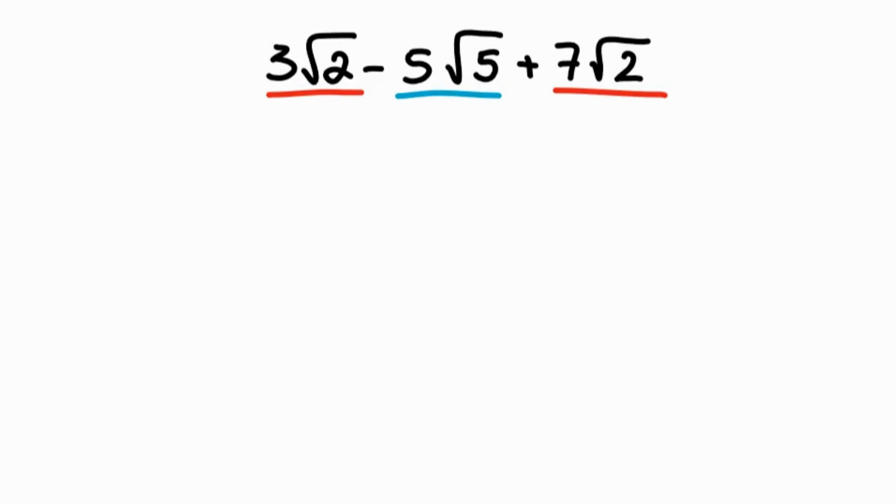So 3 square root of 2 plus 7 square root of 2 is 10 square root of 2 and subtract 5 square root of 5. This is the simplest form of the following expression.